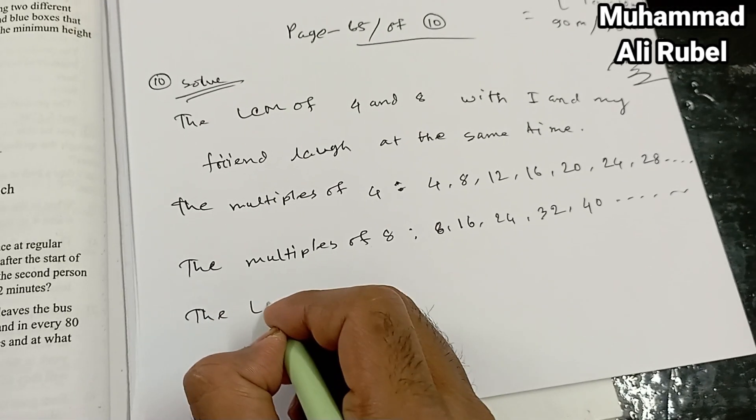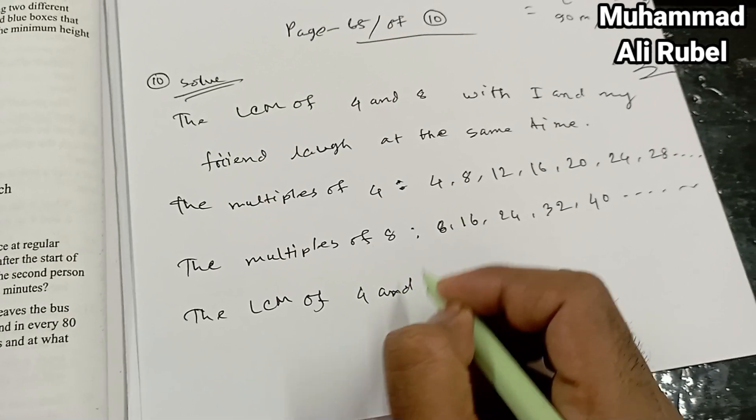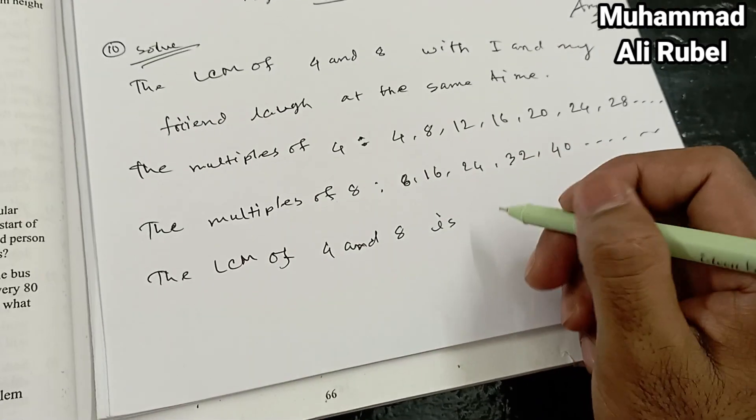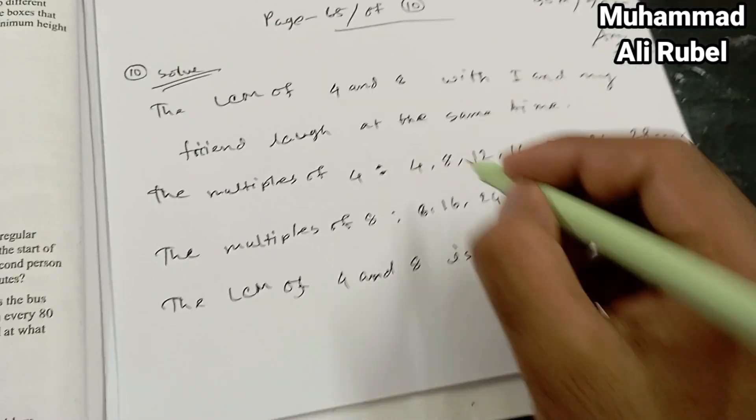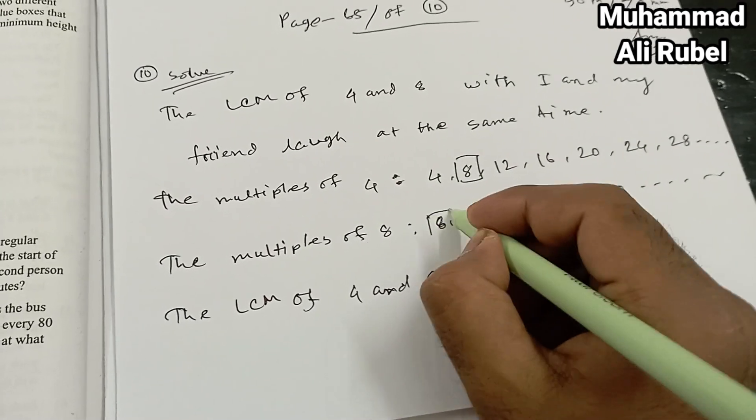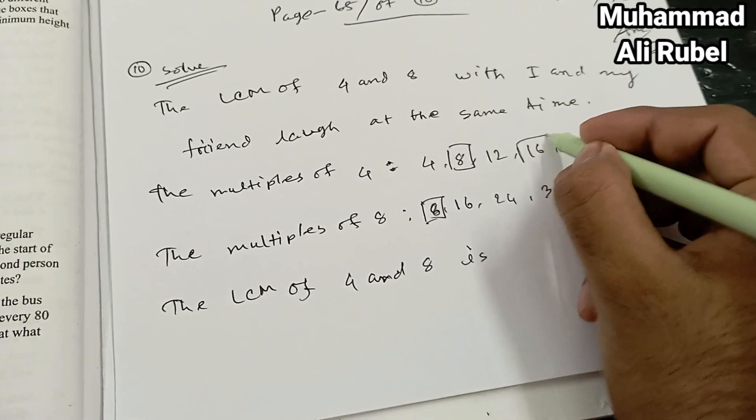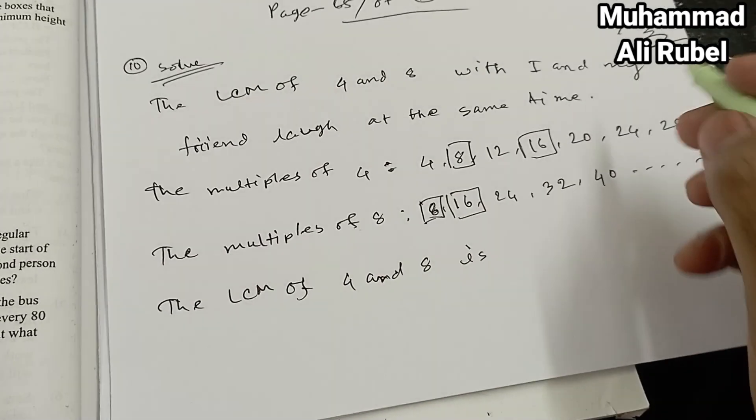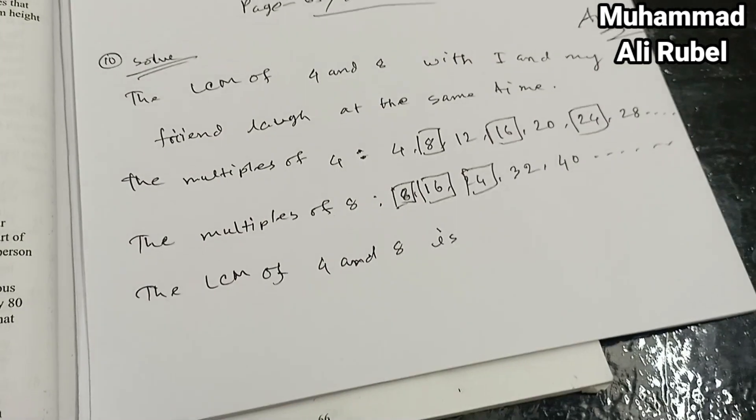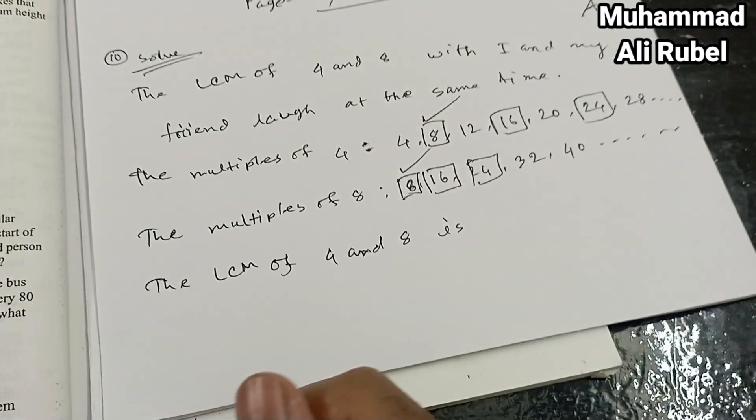The LCM of four and eight is... you look, lowest common multiple: eight, eight, eight. Then you look: sixteen, sixteen, sixteen, twenty-four, twenty-four, twenty-four. We choose the least common multiple.